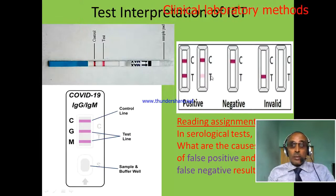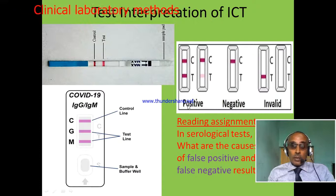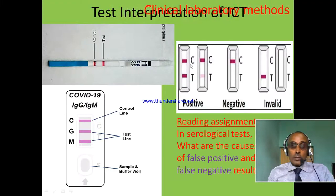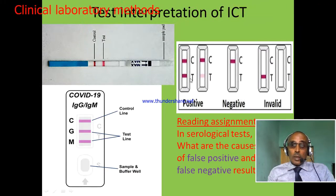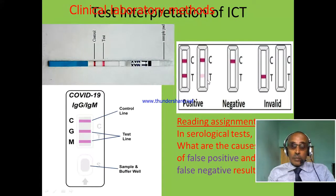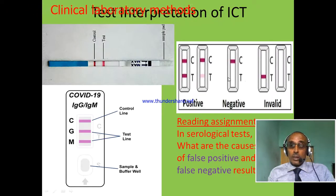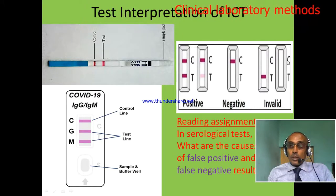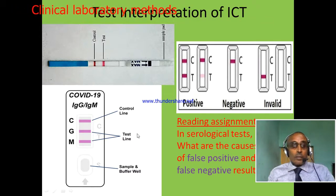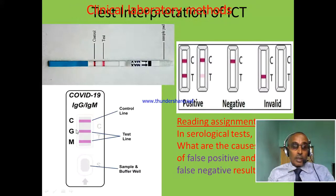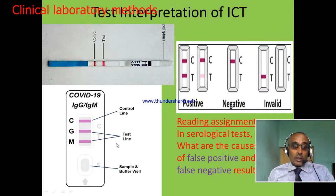Interpretation of the ICT test. There are three options. First, we report reactive or positive when there are two bars — one at the control side and one at the test side. Second, we report negative or non-reactive when there is a bar only at the control side but not at the test side. The result is invalid if there is no control bar. Some tests are designed to distinguish IgM and IgG antibody, to differentiate whether the infection is primary or secondary.